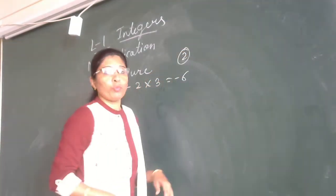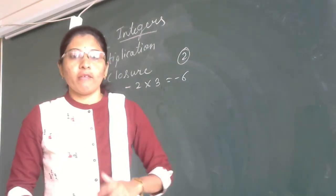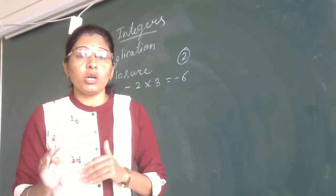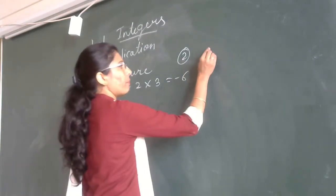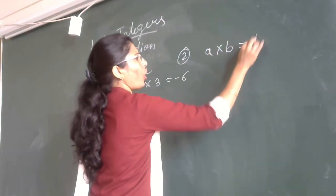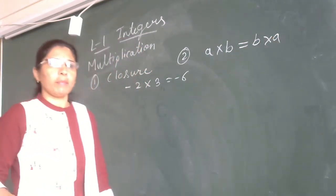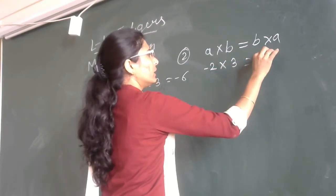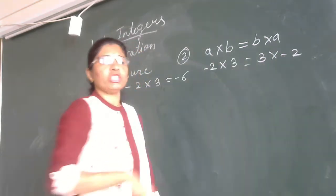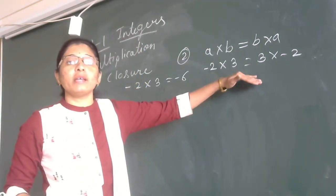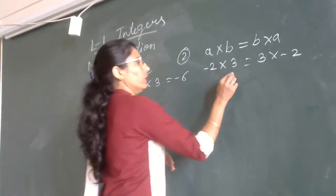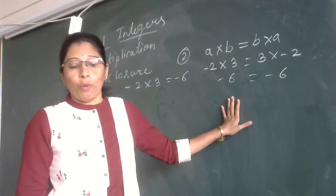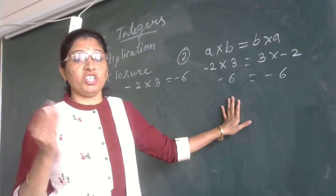The second property is commutative property. Commutative property means the product of any two integers in different orders remains the same. That means A into B or B into A is the same. For example, minus 2 into 3 or 3 into minus 2 — if you change the order, the product will be the same. So minus 6 equals minus 6. This is commutative property, also called order property.